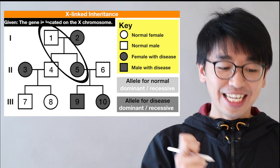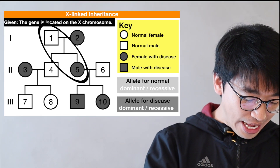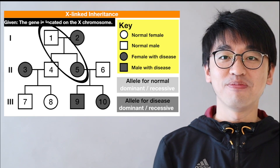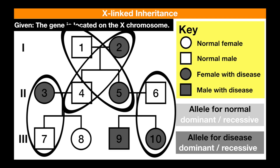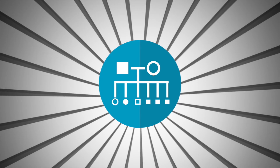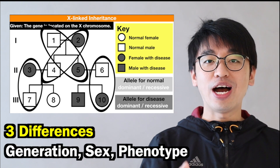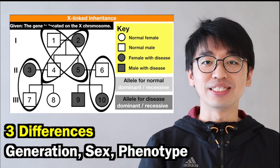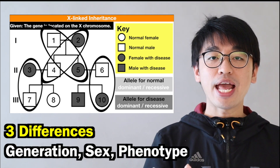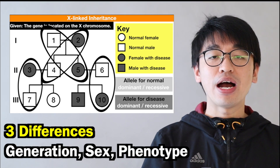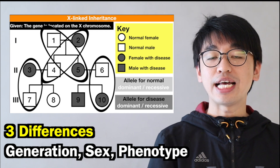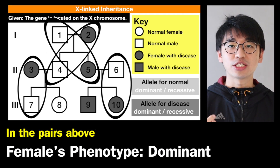The pairs that fulfill the requirements are: individuals 1 and 5, individuals 3 and 7, individuals 6 and 10, and individuals 2 and 4.